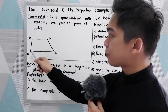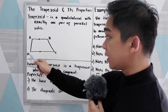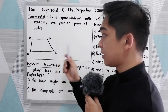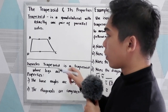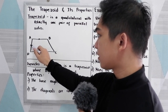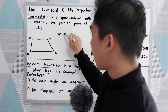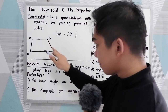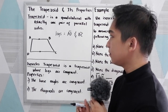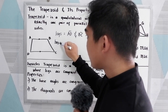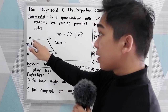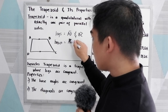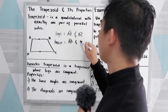So let's have our illustration. We have this trapezoid ABCD. By definition, AB is parallel to DC. In our trapezoid, we have what we call the legs. The legs here are AD and BC. We also have the bases. The bases are the parallel sides of the quadrilateral. In this case, we have AB and DC.